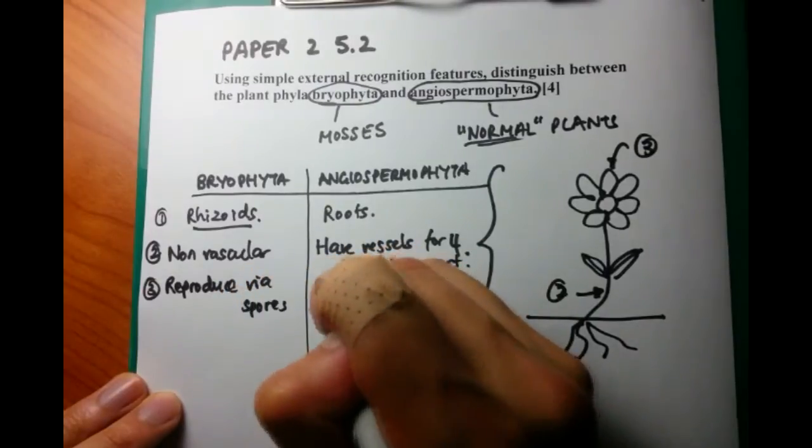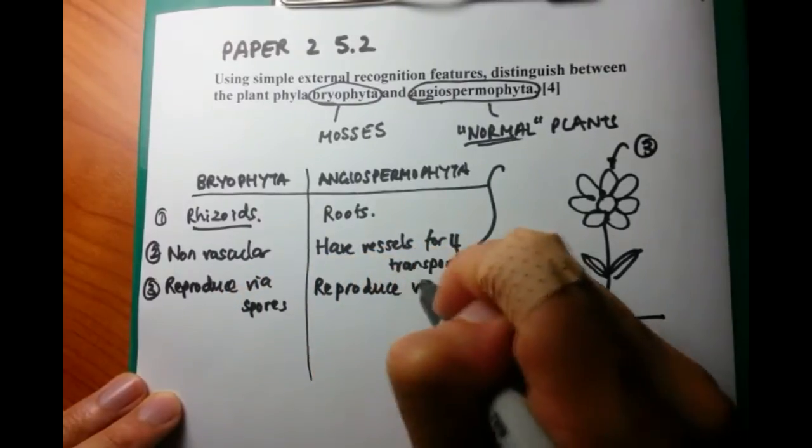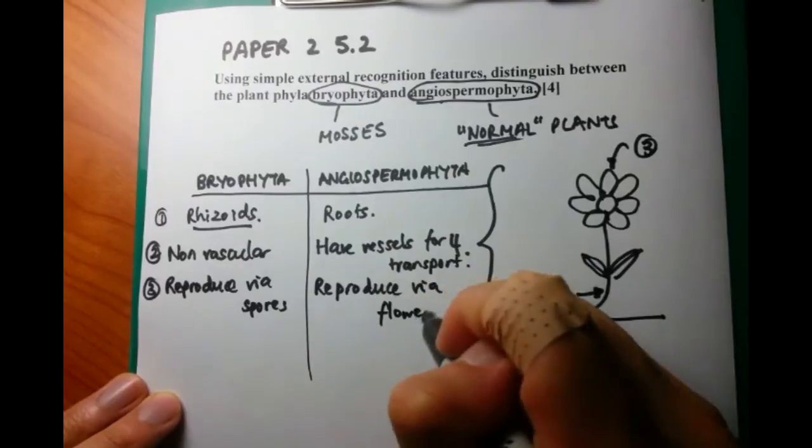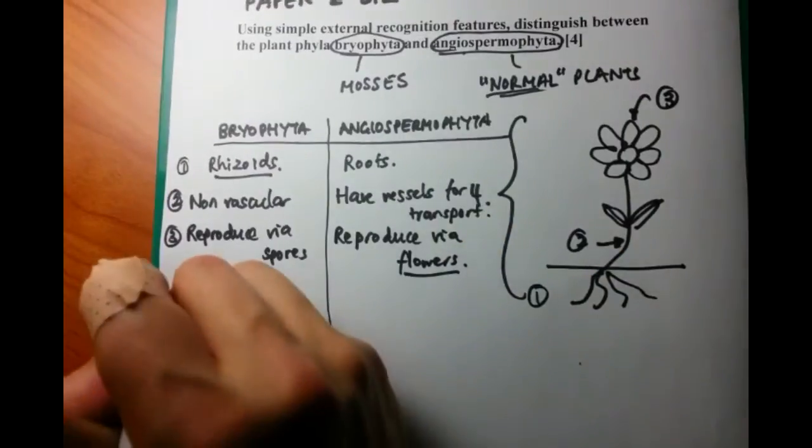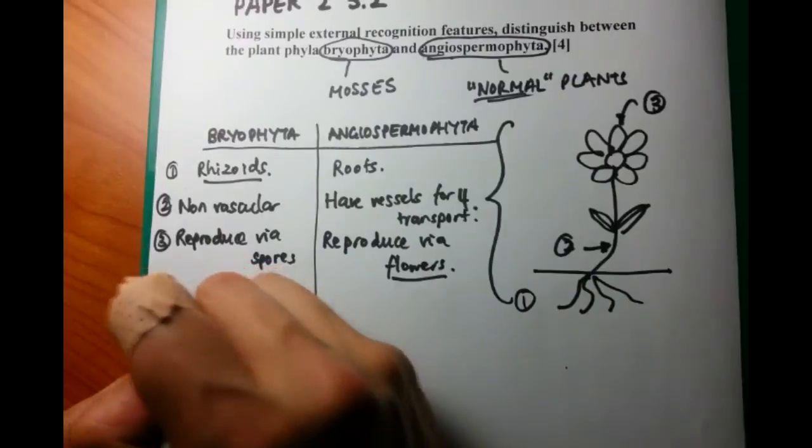Number three, we're moving up. We're looking at the flower or how the plant reproduces. Bryophyta reproduce via spores. Angiospermophyta reproduce via flowers and they have ovaries.